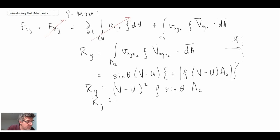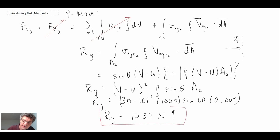And that could be either A2 or A1, they're interchangeable. So what we can do now, we can plug in the values. And we get 1039 newtons in the vertical direction.